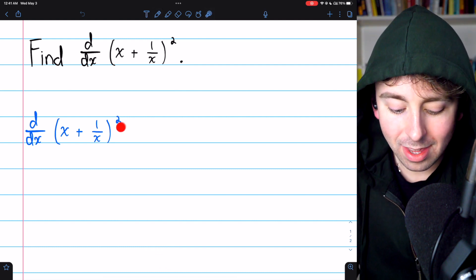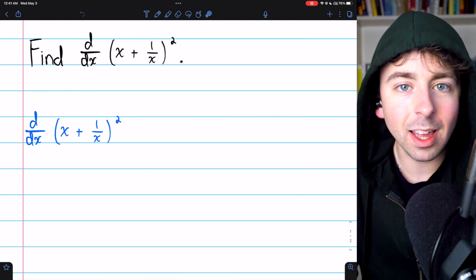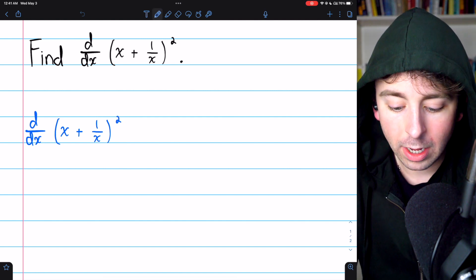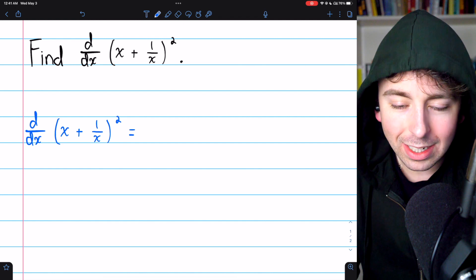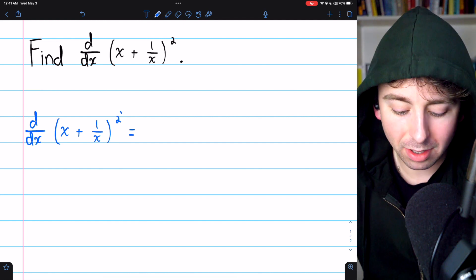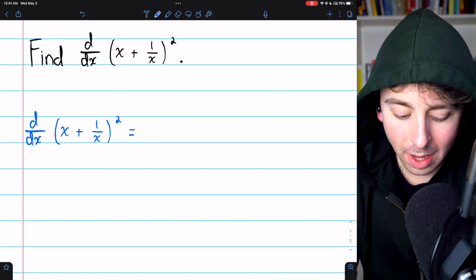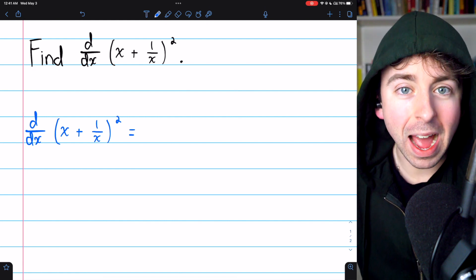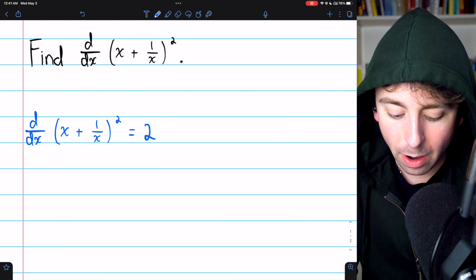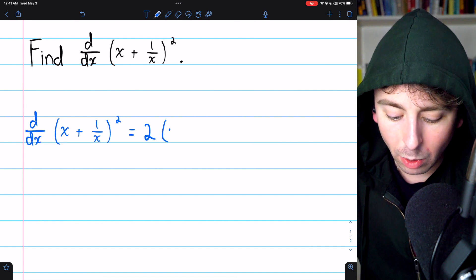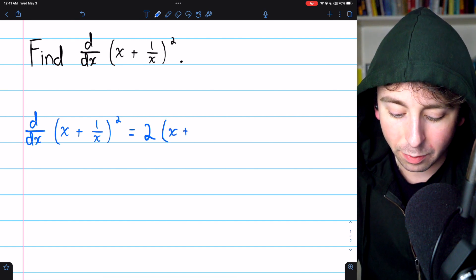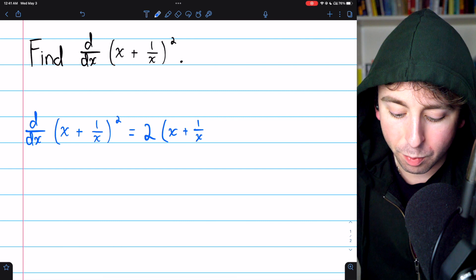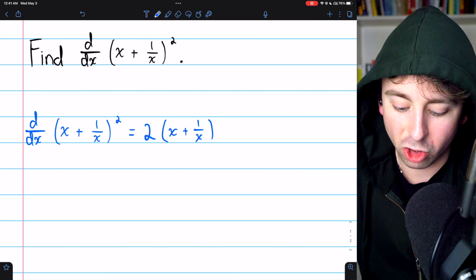So notice the outside function is a thing being squared. When we take the derivative, we need to start with that. The power of two comes down as a factor, and what's inside needs to be left alone. This is the f prime of g in the chain rule formula.